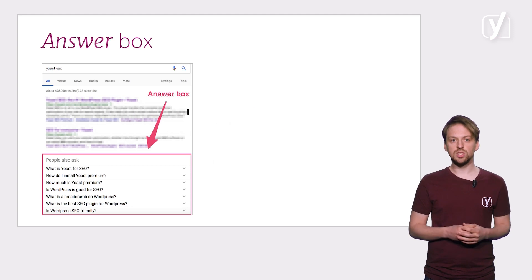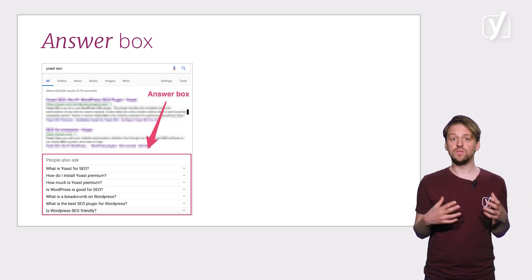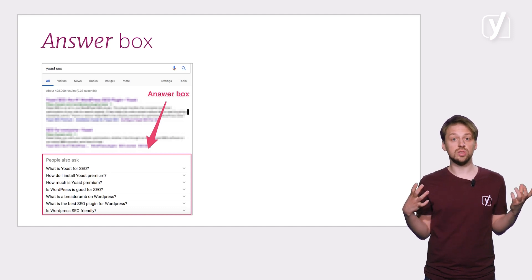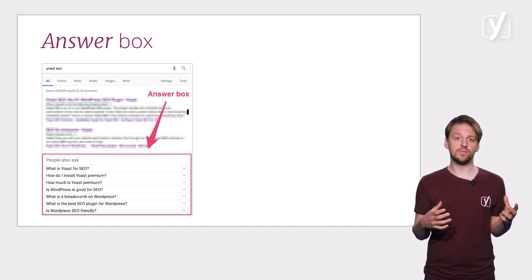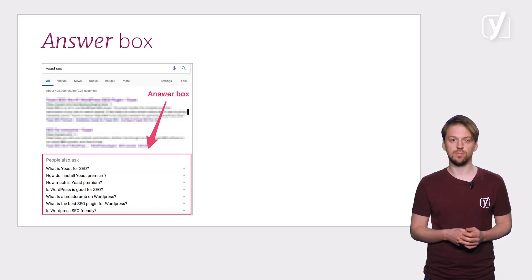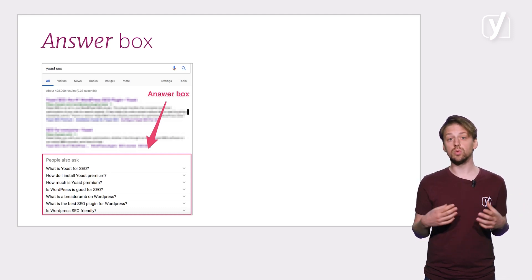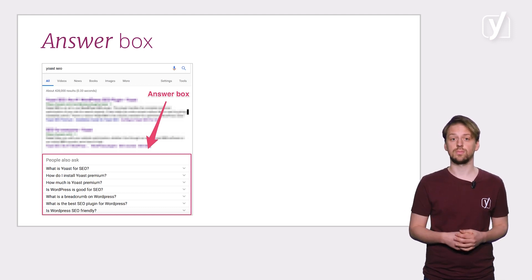An answer box appears somewhere between the organic search results. It'll give suggestions for questions that relate to the search query you typed in. If you're searching for Yoast SEO, you'll encounter this answer box between the organic search results. Clicking on one of the suggestions will give a direct answer to the specific question you asked.